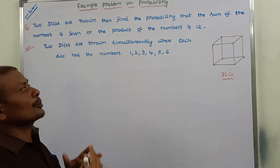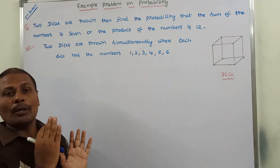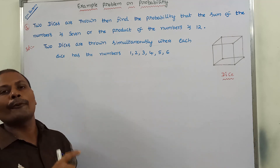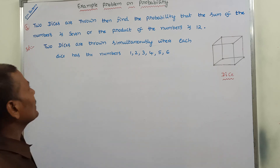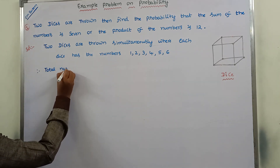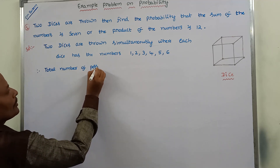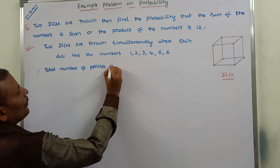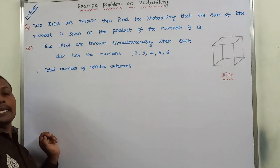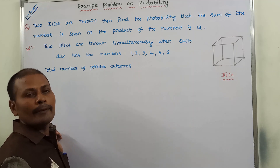Whenever two dice are thrown simultaneously, the first die has the numbers 1, 2, 3, 4, 5, 6 and the second die also has the numbers 1, 2, 3, 4, 5, 6. Therefore, we consider the total number of possible outcomes when two dice are thrown simultaneously, where each die has 6 numbers: 1, 2, 3, 4, 5, 6.